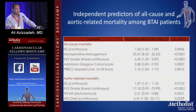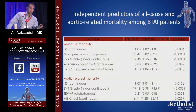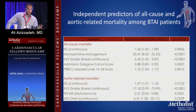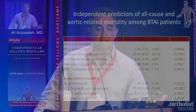The independent predictors of all-cause mortality for traumatic aortic injury include: injury severity score, non-operative management (which is protective), SVS grade (a risk factor), Glasgow Coma Score, and transfusions. For aortic-related mortality: injury severity score, SVS grade, TEVAR (which is protective), and chest injury score. That's everything you need to know about TEVAR for traumatic aortic injury — for your test and for your life.